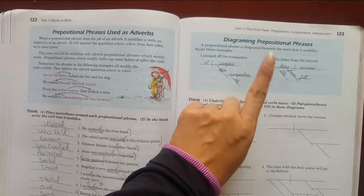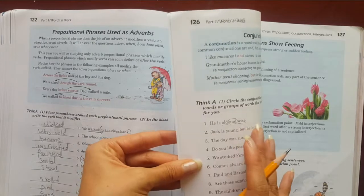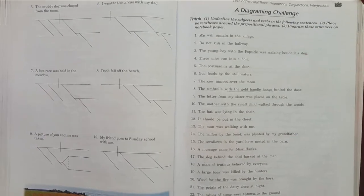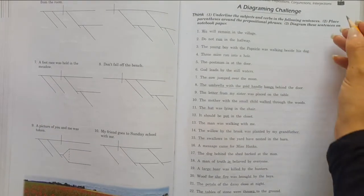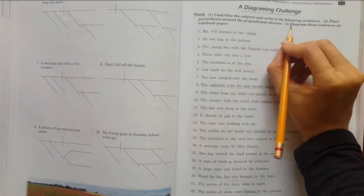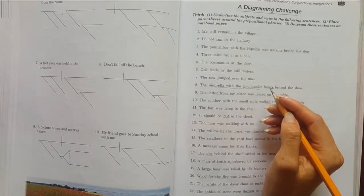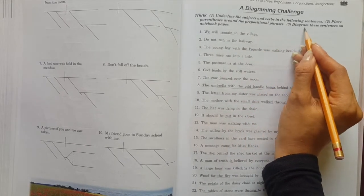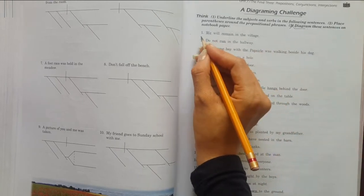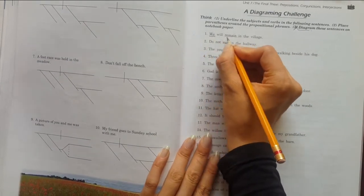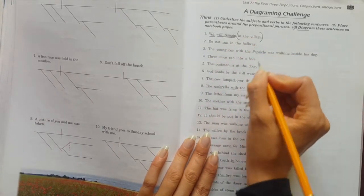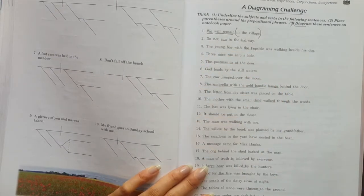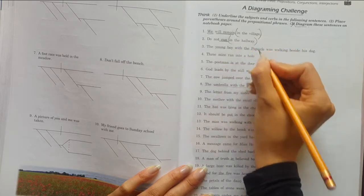Now we're going to move to page 125. We'll skip 123 and 124. What should we do here on 125? Underline the subjects and verbs in the following sentences, and place parentheses around the prepositional phrases. We're not doing the diagram. Let me show you how. 'We will remain in the village' - I underline the verb 'will remain,' the subject 'we,' and the prepositional phrase 'in the village.'